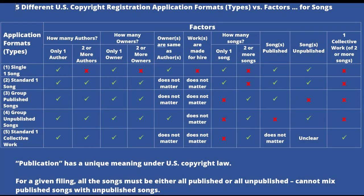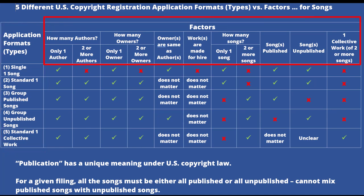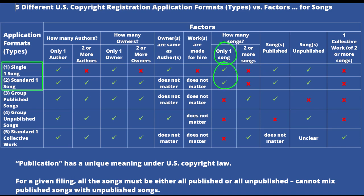What you're seeing now is a table I prepared that basically looks at how the five different U.S. copyright registration applications for songs interact with the factors we just looked at. For example, over here on the left-hand column, I've listed those five different U.S. copyright registration applications for songs, and across the top are all the factors. If you only had one song to register, then one of the first two U.S. copyright registration applications would probably be the way to go.